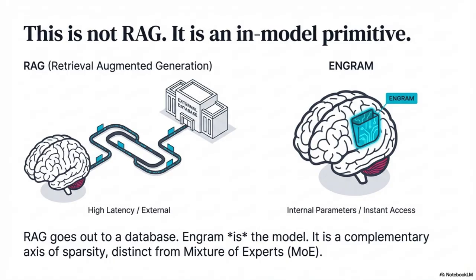Third, it runs a gate to decide if that memory is actually relevant to the current context. And finally, that gated memory gets fused into the residual stream, enriching the information before attention or MOE ever sees it.